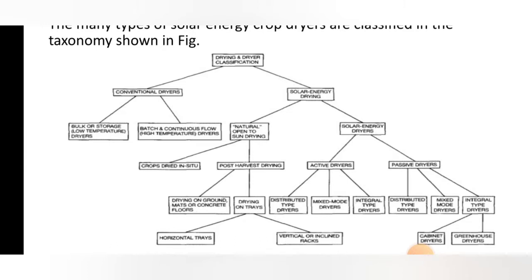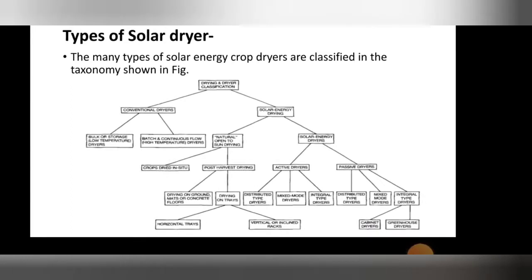In solar energy dryers there are two types: active dryers and passive dryers. Active dryers are classified into three types: distributed type dryers, mixed mode dryers, and integral type dryers. Passive dryers are also classified into three types: distributed type, mixed type, and integral type dryers. In passive dryers, the integral type is further divided into cabinet dryers and greenhouse dryers.